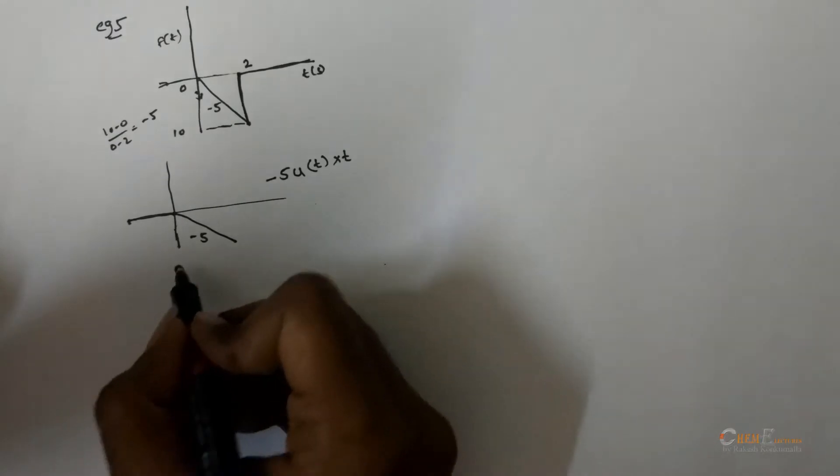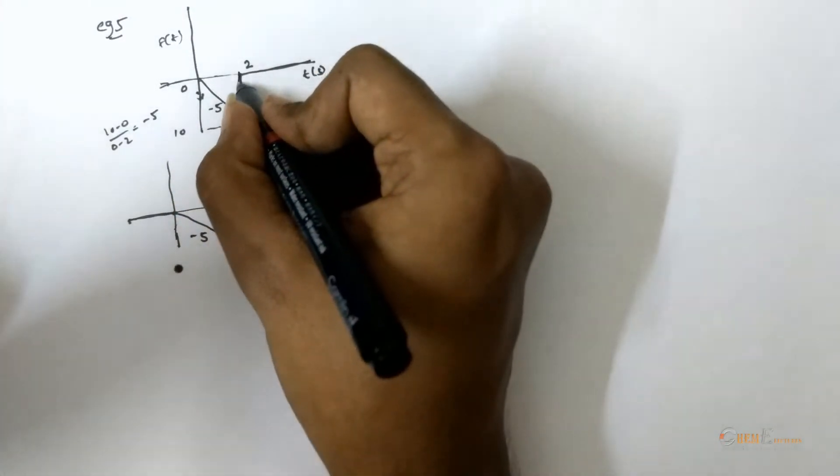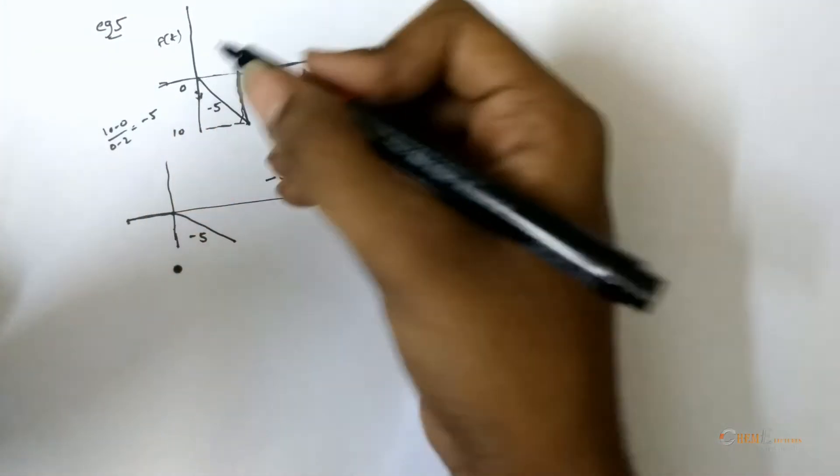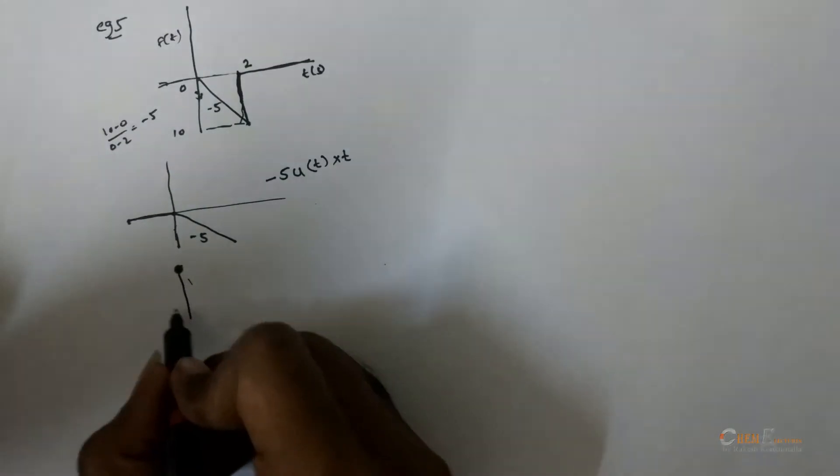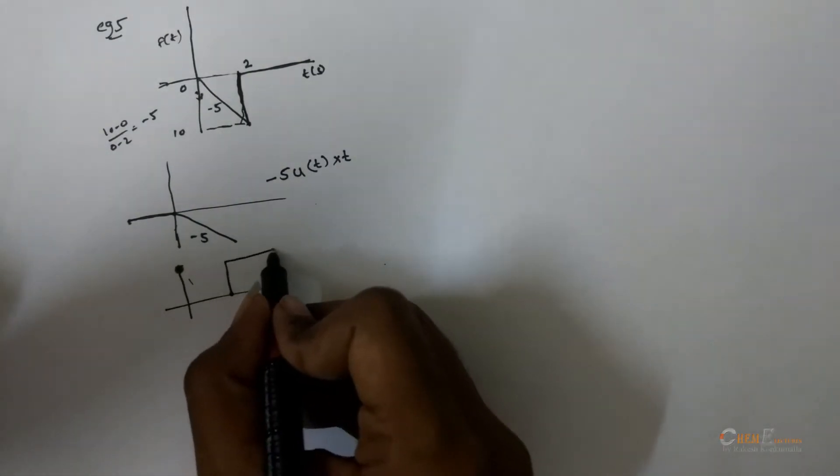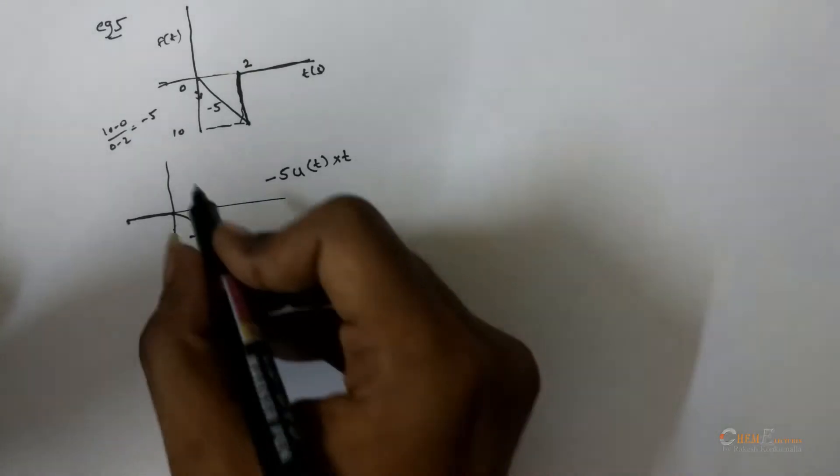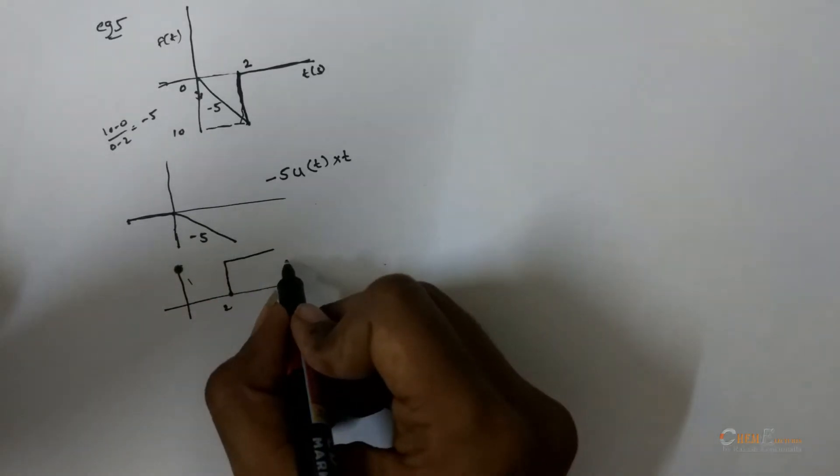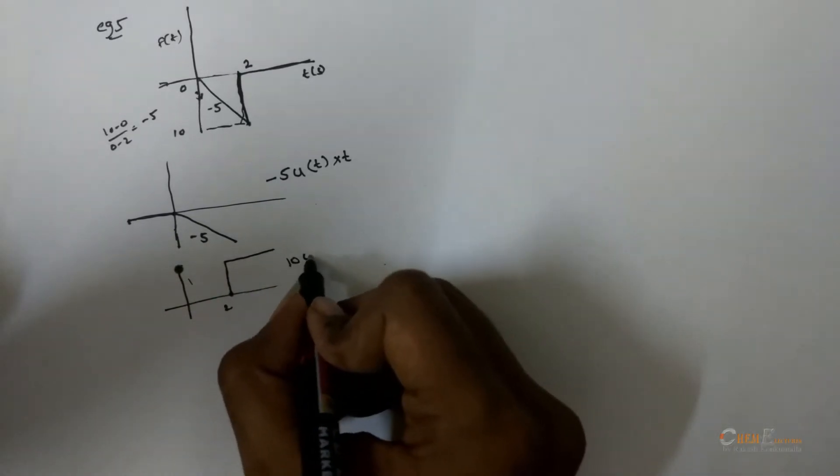Then there is an increment in the step function with a magnitude 10. At 2 give an increment, so f will be 10 u.